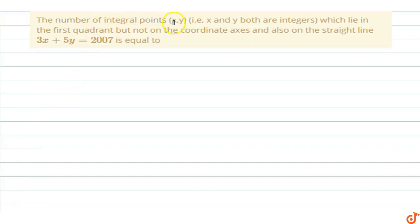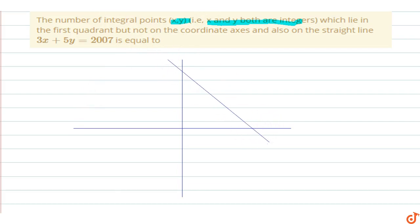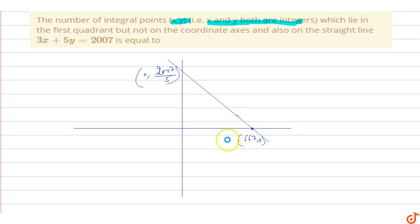In this question, we need to find the number of integral points (x, y) — where both x and y are integers — which lie in the first quadrant, not on the coordinate axes, and also on the straight line 3x + 5y = 2007. So the points on the coordinate axis, like (667, 0) or (0, 2007/5), are not integers or not to be considered.